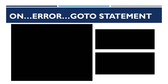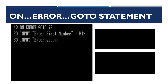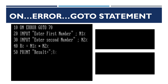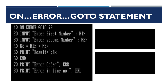Let's check out an example of the ON ERROR GOTO statement in GW BASIC. The first line states that if an error occurs, go to line 70. Lines 20 and 30 ask for input of two integer-type numbers. These numbers will be multiplied and the result stored in another integer-type variable R. In line 50, the result is printed and the program ends. In case of error, the error handling routine at line 70 prints the error code ERR, and line 80 prints the error line number ERL.